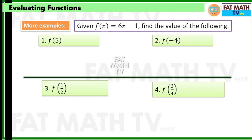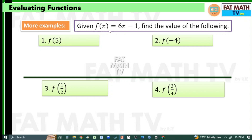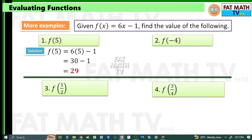Let's have other examples. Here f of x is 6x minus 1, and you're asked to find the value of f of 5, f of negative 4, f of 1 half, and f of 3 fourths. For f of 5, replace x with 5: 6 times 5 minus 1. 6 times 5 is 30, 30 minus 1 is 29.